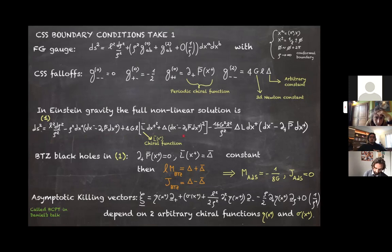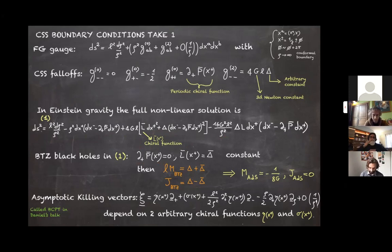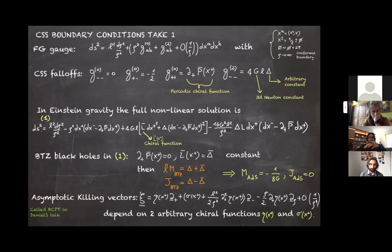It is important to remark that there are BTZ black holes in the solution — found by setting ∂+ L-bar = 0 and L-bar equal to a constant, where delta and delta-bar are combinations giving the BTZ mass and angular momentum, which can be further specified to give the AdS vacuum solution.